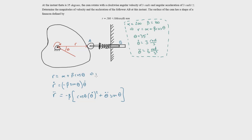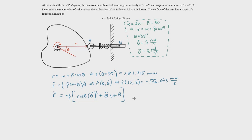Plugging in theta equals 35 degrees, R equals 281.915 millimeters. Substituting theta and theta-dot gives r-dot equals negative 172.073 millimeters per second. And r-double-dot, which is a function of theta, theta-dot, and theta-double-dot, evaluates to negative 909.310 millimeters per second squared.